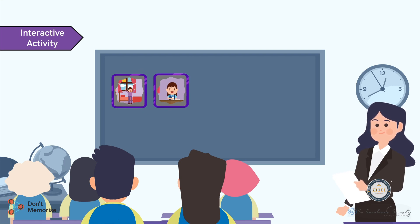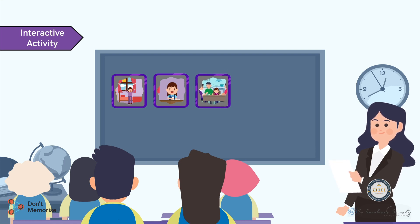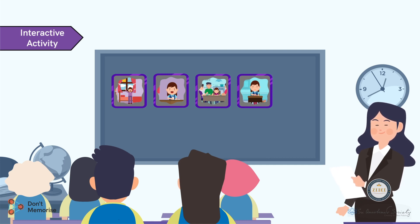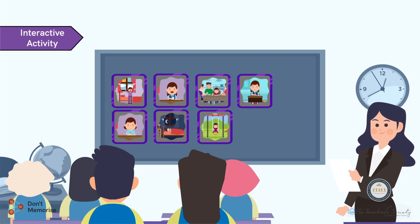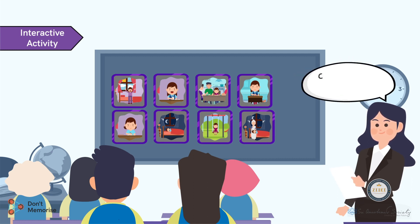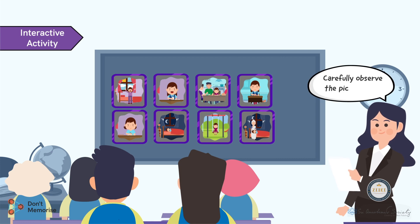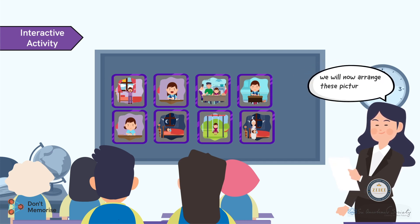The picture cards include: a girl getting up with the rising sun, a girl wearing school uniform at home and having milk and biscuits, a girl eating dinner with other members of the family, a girl sitting in the classroom, a girl studying at home, a girl sleeping in bed with a moon scene in the sky, a girl playing in the park, and a girl listening to stories from her grandmother. Instruct the students to carefully observe all the picture cards.